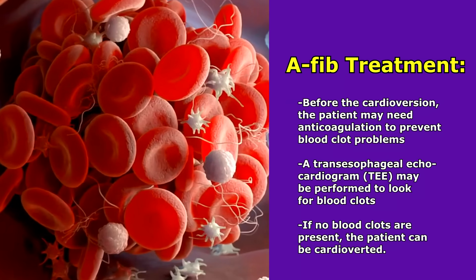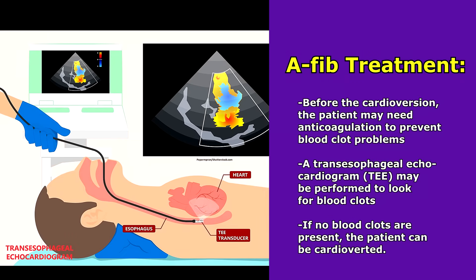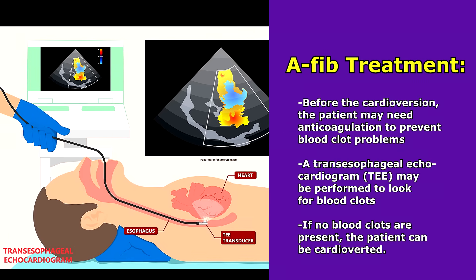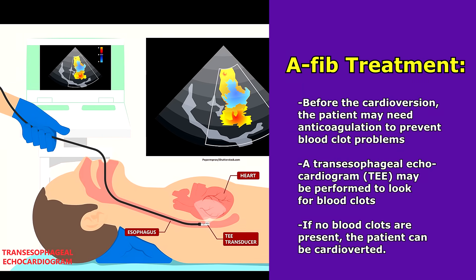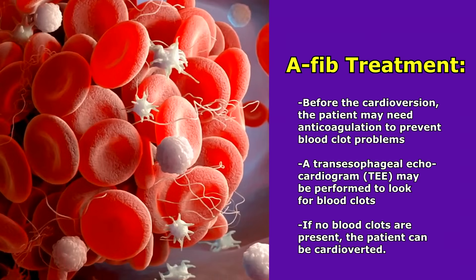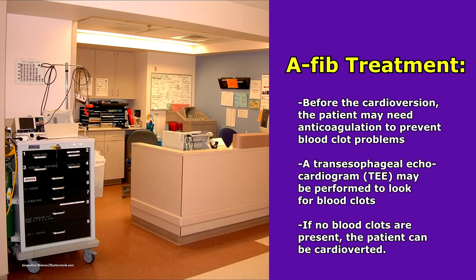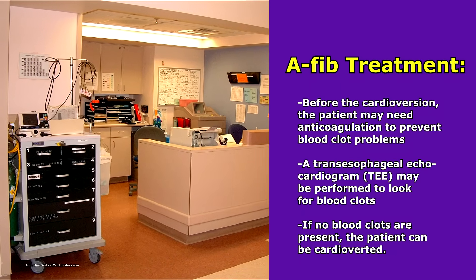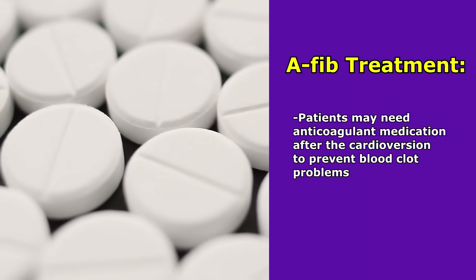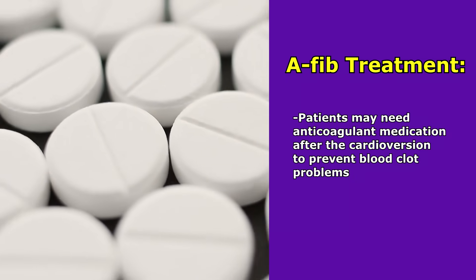Many times before a cardioversion, a TEE will be performed — a transesophageal echocardiogram. They use ultrasound, going through the patient's mouth down through the throat and behind the heart through the esophagus, to take pictures of the heart and see if any blood clots are present. If the patient doesn't have a blood clot, they can be cardioverted. After the cardioversion, patients may need anticoagulation for several weeks to prevent any blood clot problems.